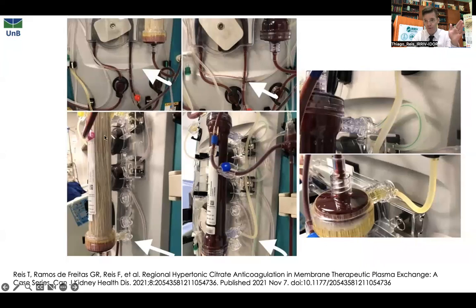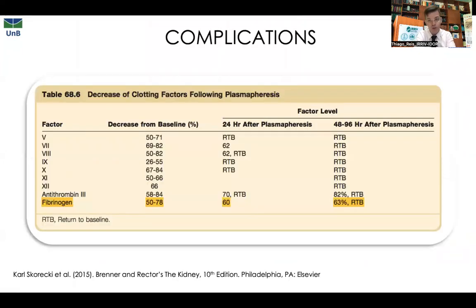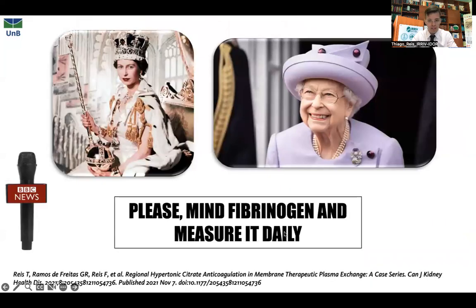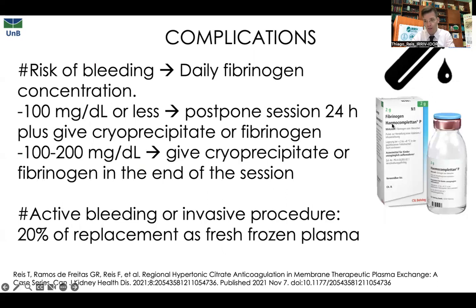This image compares a plasma filter with a CRRT filter — you can see the difference in fiber size. Complications of this method are related to the removal of clotting factors. We monitor this by measuring fibrinogen daily; fibrinogen takes 48 to 96 hours to return to baseline. In one case, the patient started TPE with fibrinogen at 225 mg/dL; after the first session it dropped to 81, so we paused and gave cryoprecipitate. After two days it was still below 200, so we performed the session and immediately replaced cryoprecipitate. Fibrinogen can also be replaced with fibrinogen concentrate.